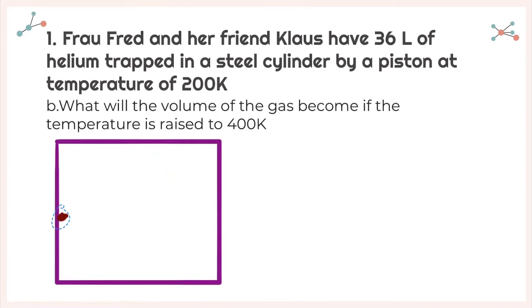So if I double my temperature, that means I'm going to have to double my original volume. So now instead of 36, I'm going to have a final volume of 72 liters.